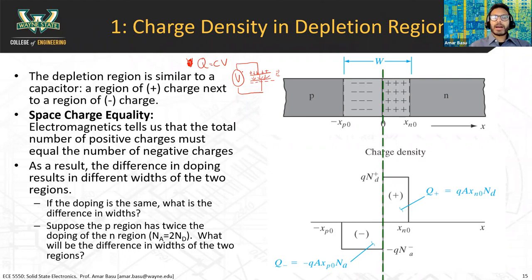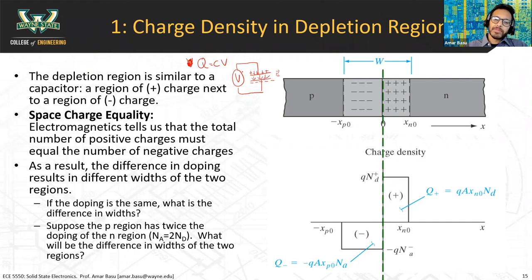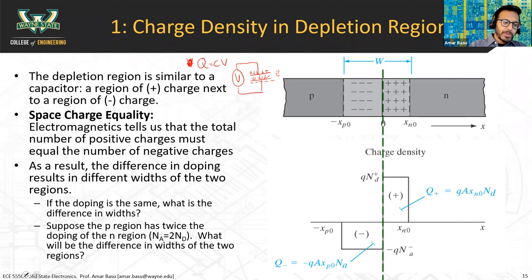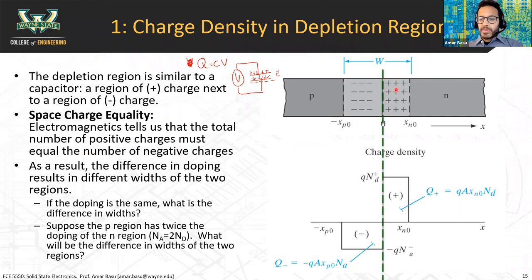When we look at this PN junction, it looks a lot like a capacitor because it has a buildup of positive charge and a buildup of negative charge on the opposite end. The rule of electrostatic neutrality applies here, and specifically with the diode it's called space charge equality. Electromagnetics tells us that the total number of positive charges must equal the number of negative charges.